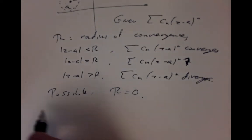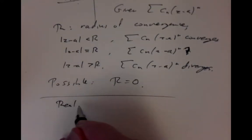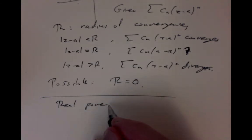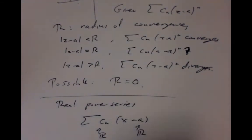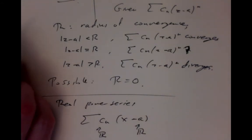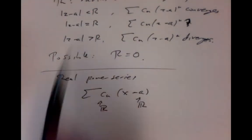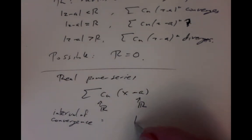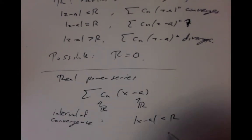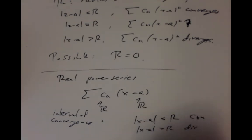A very special case is if we had a real power series—a sum of cn times (x minus a) to the n, where a and the cn's are all real numbers. For a real power series, you get convergence in an interval rather than a disk. You get convergence when |x minus a| is less than r, divergence when |x minus a| is greater than r, and at the endpoints where |x minus a| equals r, we don't know what happens.